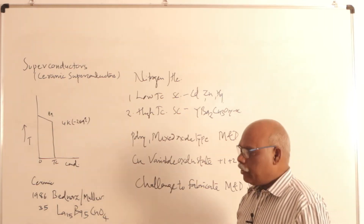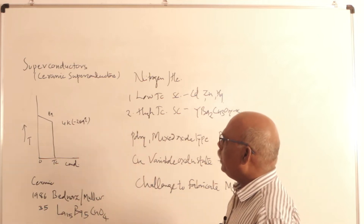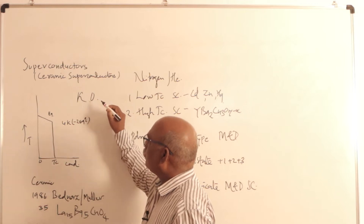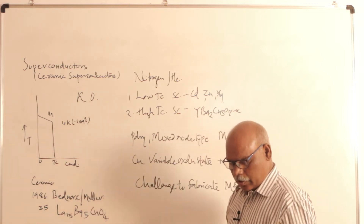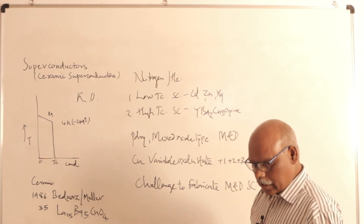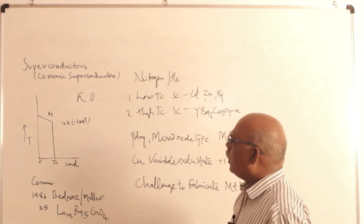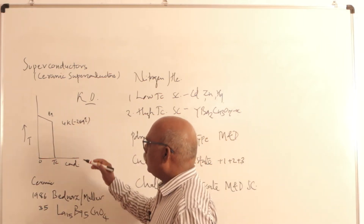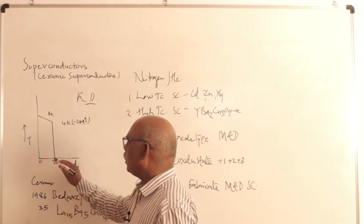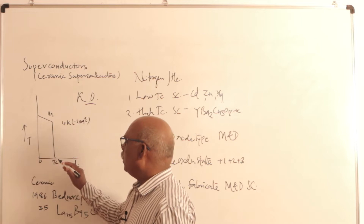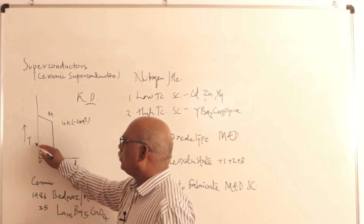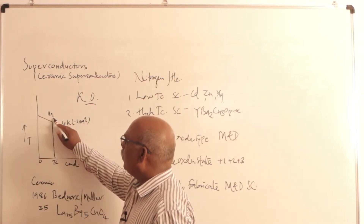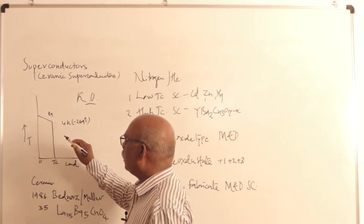This discovery was made by Dutch scientist Kamerlingh Onnes. Kamerlingh Onnes was studying the variation of conductance with respect to temperature. He used mercury (Hg) for this experiment.